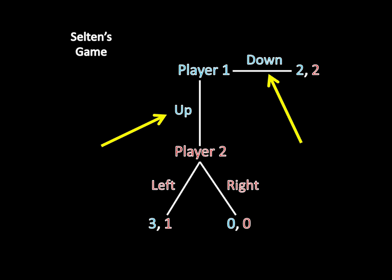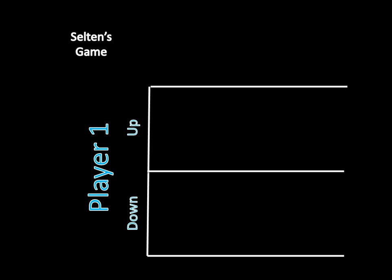Well, there are only two combination of moves that player one has. You can either go up or you can go down. So that tells us we need to have two rows for the matrix. One for up and one for down.